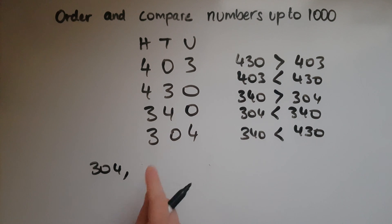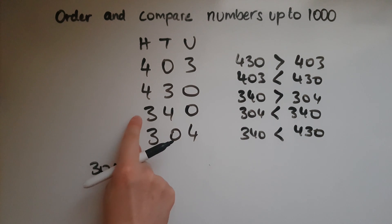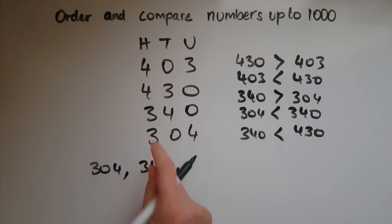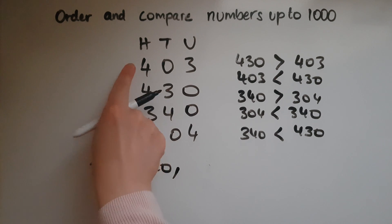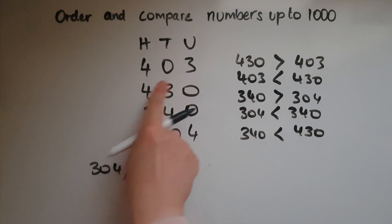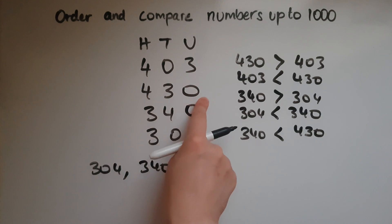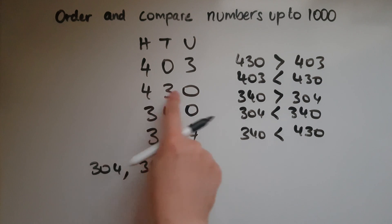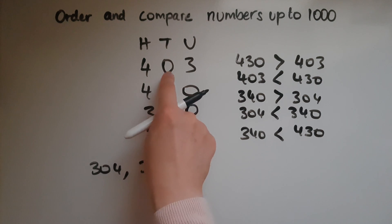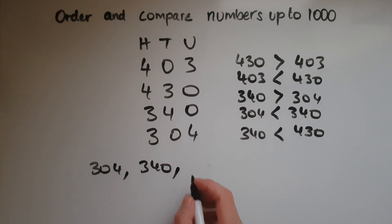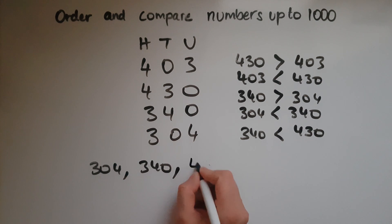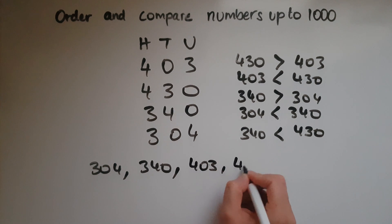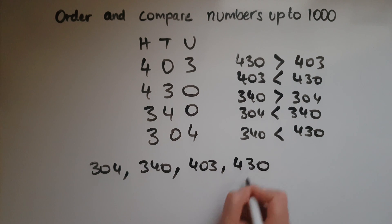And then there comes 340. Now, is it 403 or 430 next? 403 is smaller than 430 because it has no tens. So the order is 304, 340, 403, and finally 430.